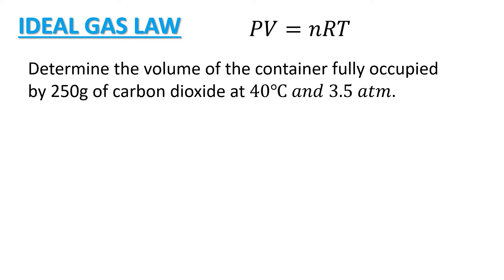Next problem, determine the volume of the container fully occupied by 250 grams of carbon dioxide at 40 degrees Celsius and 3.5 atm. In this problem, we were given the mass of our gas behaving ideally the carbon dioxide with a mass of 250 grams and then the temperature is 40 degrees Celsius and that is equivalent to 313.15 Kelvin. Now that is our absolute temperature and the pressure of the gas is 3.5 atm.